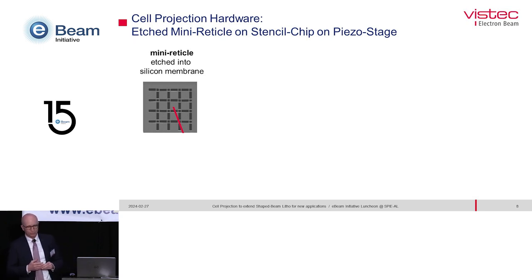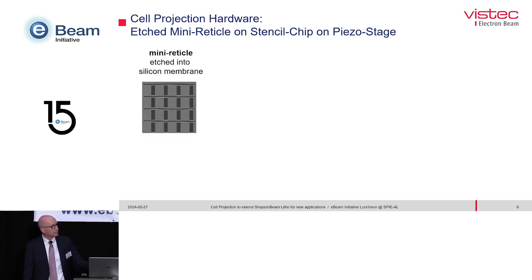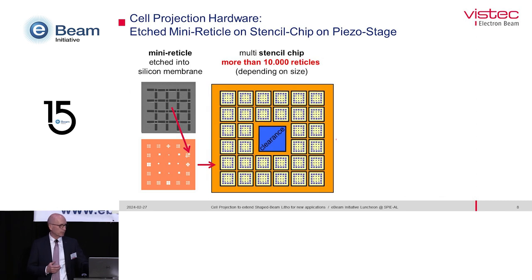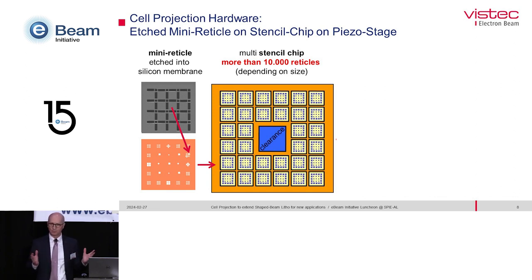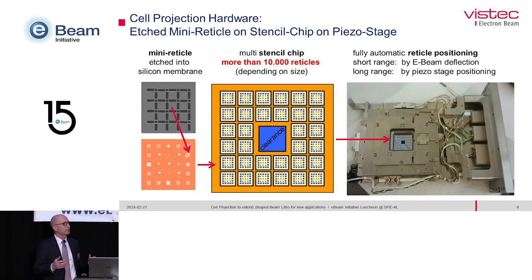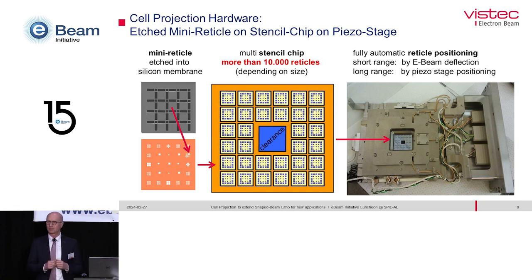Let's look at the mini reticle itself. It is a structure etched in a very thin silicon membrane. Many different types of these mini reticles are possible. These are integrated on what we call a stencil chip, and again on what we call a multi-stencil chip. This sums up to more than 10,000 of these small mini reticles of different shapes and structures contained in the multi-stencil chip. This chip is integrated in the motorized stage, which is able to move to new multi-stencil chips when the electron optical selection of the mini reticles reaches its limit.